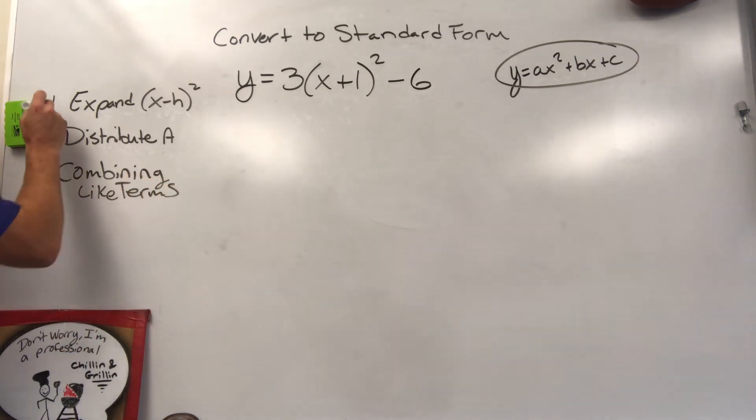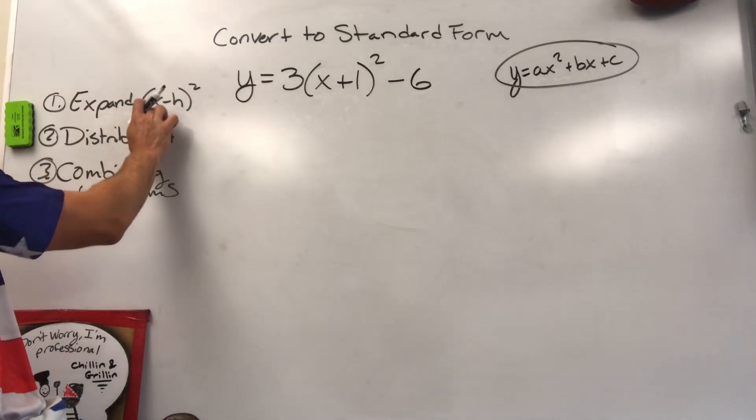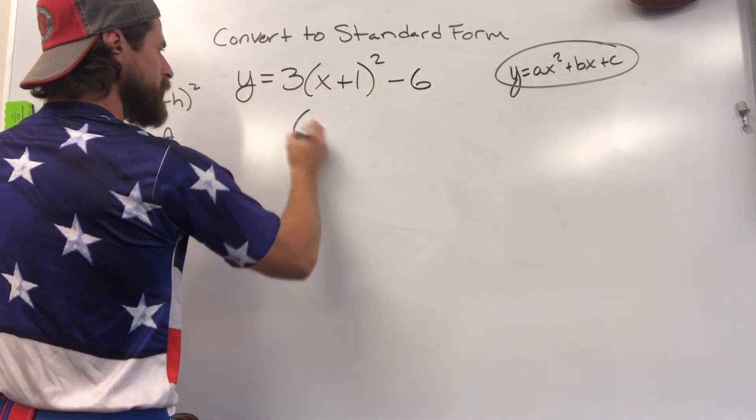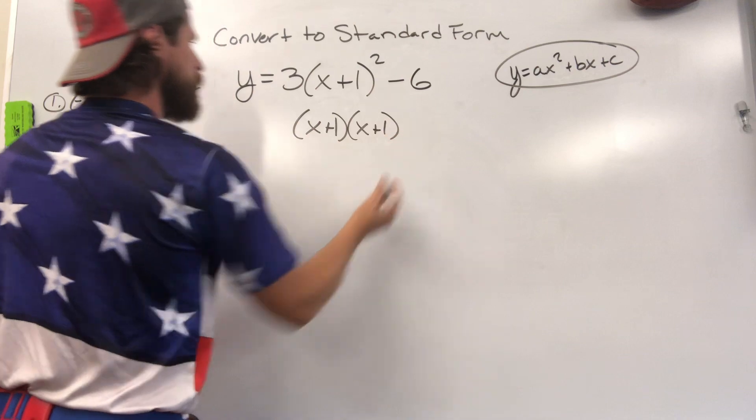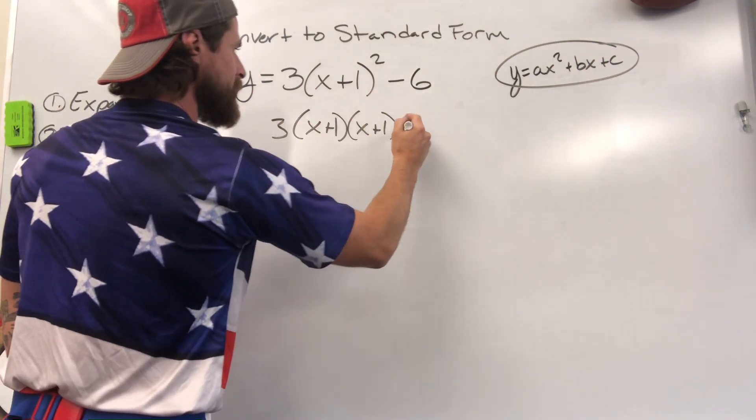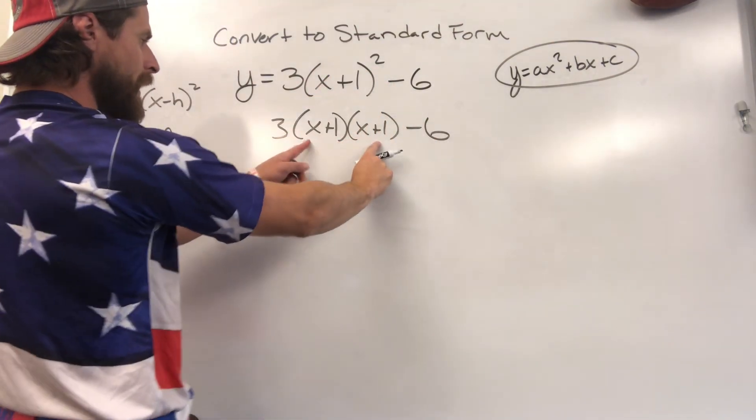And if you follow these one, two, three easy steps, we'll have exactly what we need. Let me show you how to do it. Expand x minus h squared. That's x plus one squared which would be x plus one times itself. We still have three in the front. We still have minus six at the end. But what we did is took this operation and expanded it out.